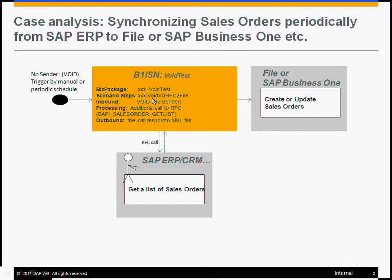A new system type, vault, has been introduced to support creating an integration scenario without a sender. This means we can trigger a scenario by menu — by clicking a button to immediately start processing — or we can schedule it to run every day or every week. In the following scenario, we are going to create a vault testing package. The sender will be vault, and we'll enable triggering by menu and also enable the scheduler for this scenario.